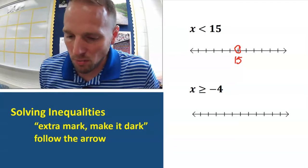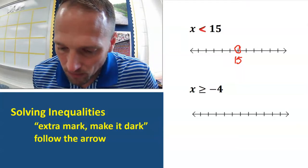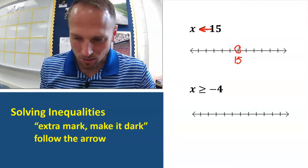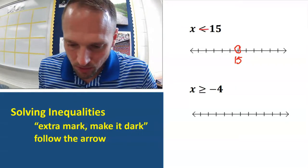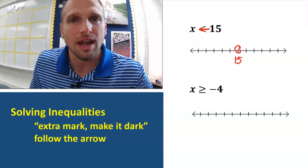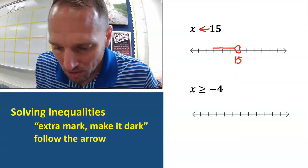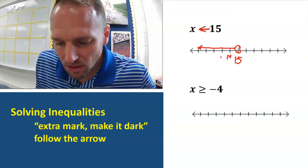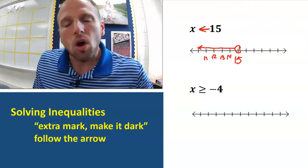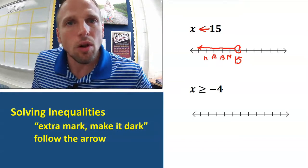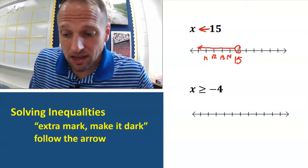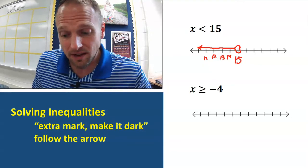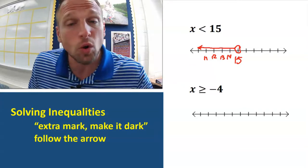Draw a circle where the number is. Next, look at the inequality sign and imagine it like an arrow. The arrow is pointing to the left, so I come down to 15 and draw an arrow pointing to the left. That covers 14, 13, 12, 11, and so on — all of those numbers are part of our solution. 14 is less than 15, 13 is less than 15, 12 is less than 15 — but 15 is not less than 15, which is why it's an open circle.